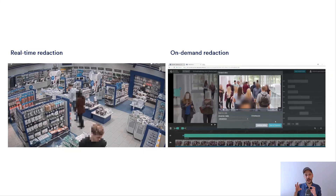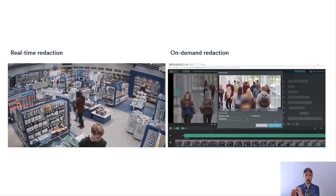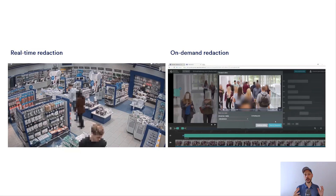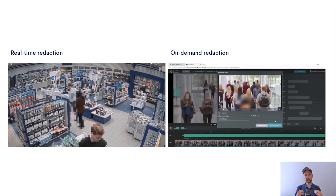But you still might want to show the perpetrator. The big advantage of doing it after the fact is that it could be a semi-automatic process where the user chooses which people should be redacted and which should not — really identifying the perpetrator, who would not be hidden in the video, but everybody else's privacy would be protected. So it's a completely different use case than real-time redaction because you're doing it after the fact when you export the video.